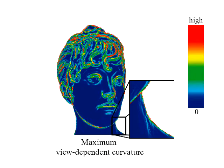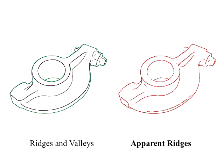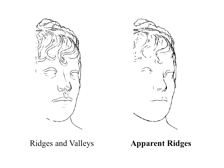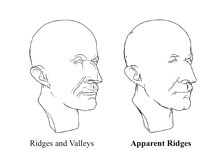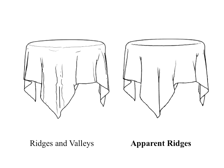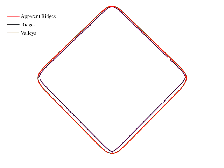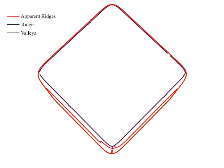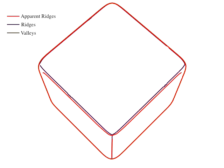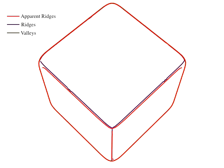Apparent ridges are the extrema of this view-dependent curvature. Apparent ridges are related to ridges and valleys. Where ridges and valleys do well, apparent ridges are in similar locations. Where ridge and valley lines are too rigid and boxy, apparent ridges modify them to be closer to the contours.